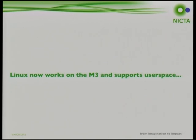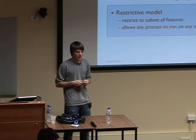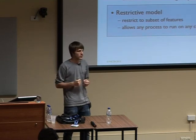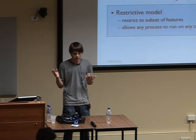With standard Linux running on the M3 and user space applications working, we moved on to our main goal: getting Linux to run on both the A9 and M3 cores simultaneously. We chose the restrictive model, restricting all user space programs to the common subset of Thumb2 features available on both core types. We wanted to provide an SMP-like system for scheduling tasks on either core and to investigate energy efficiency by offloading tasks.